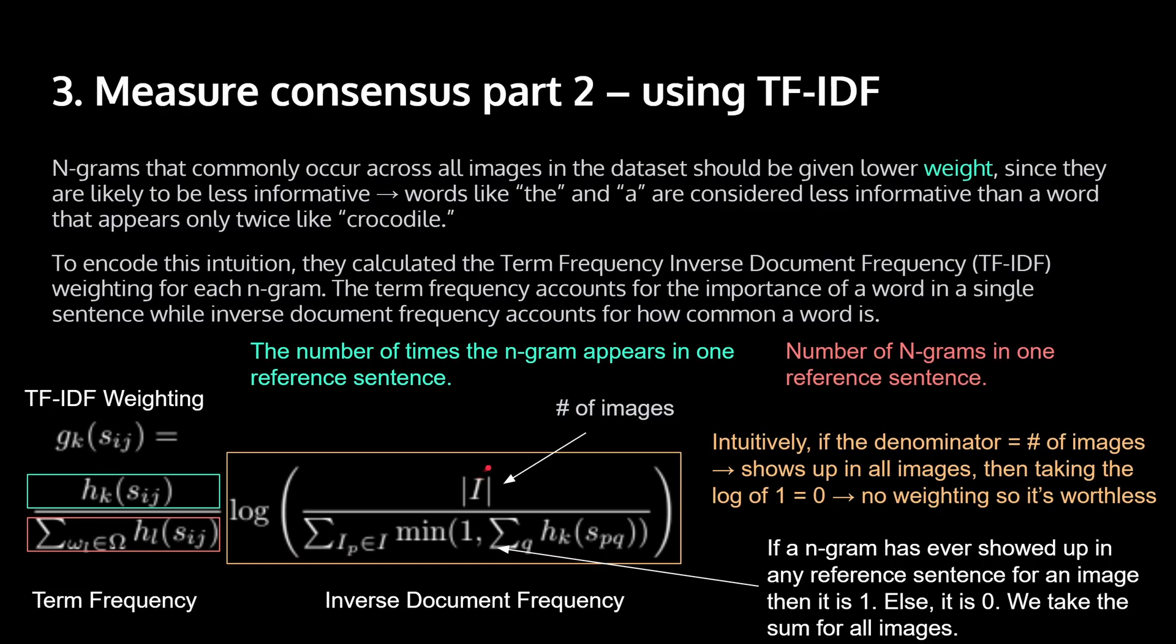And in the orange part, in the numerator, we have the number of images. The total number of images. And in the denominator, we have this crazy math looking thing. So let's break this apart. So what this part is essentially saying is that if an n-gram has ever showed up in any reference sentence for an image, then it is one. Otherwise, it is zero. Because, think about it, it's taking the min of one or zero. So it could either be one or zero. And then, this means that we're taking the sum of all of this.